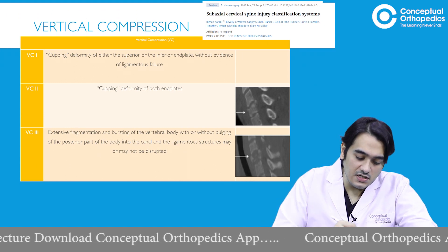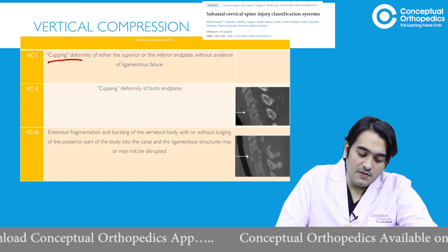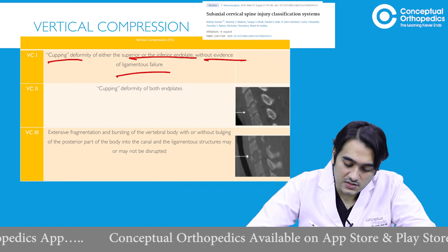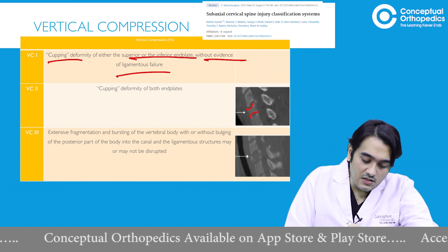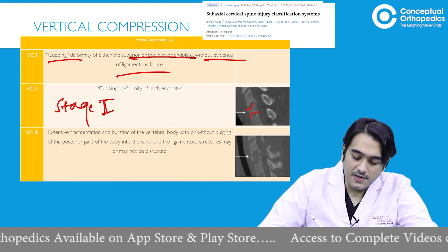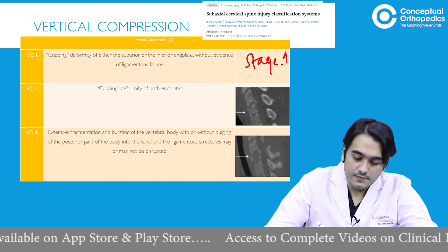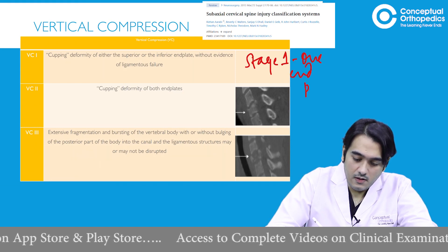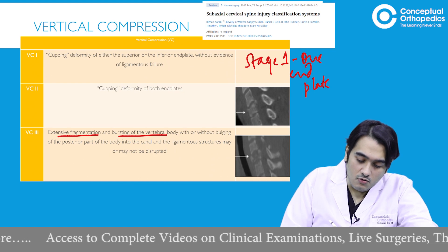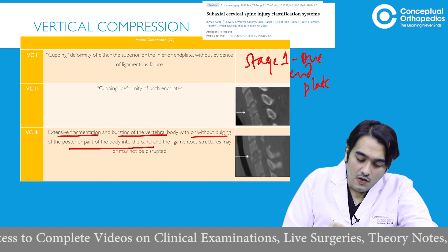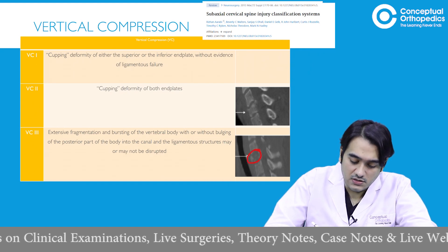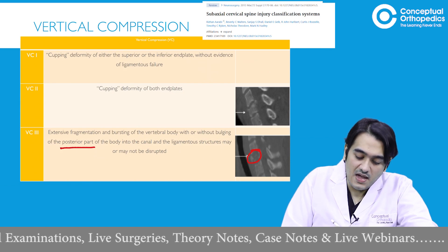Vertical compression has three stages. Stage one is a cupping deformity of either the superior or inferior end plate without any evidence of ligament failure. Stage two shows cupping of both end plates; if only one end plate is cupped, that is stage one. When force increases in stage three, there is excessive fragmentation and bursting of the vertebral body, with or without bulging of the posterior part into the canal. The ligamentous structures may or may not be disrupted.